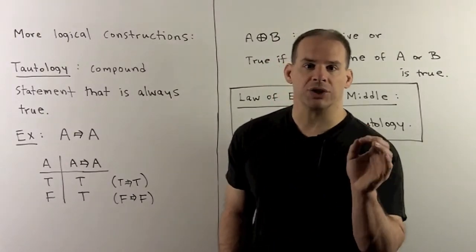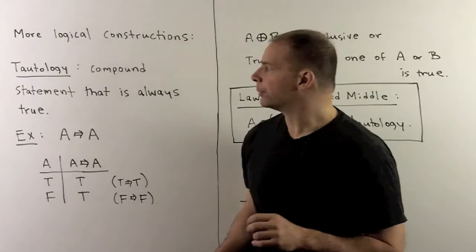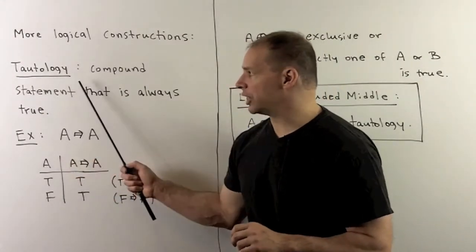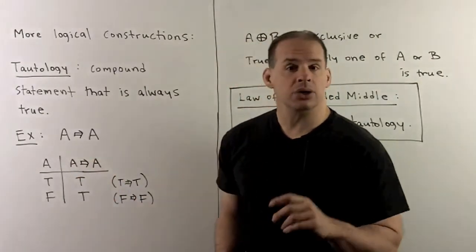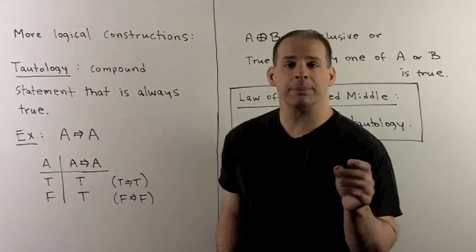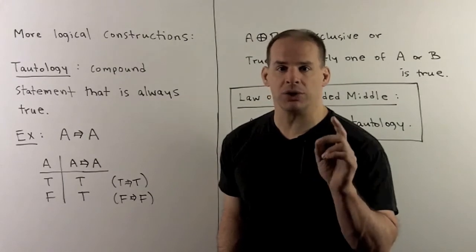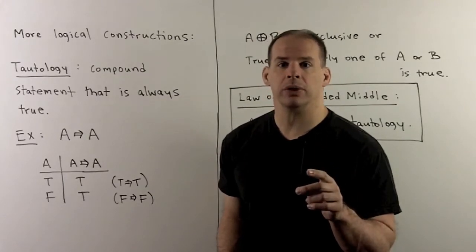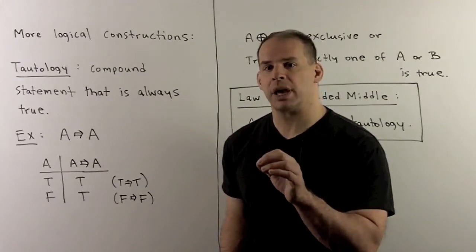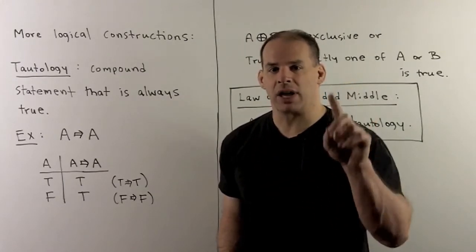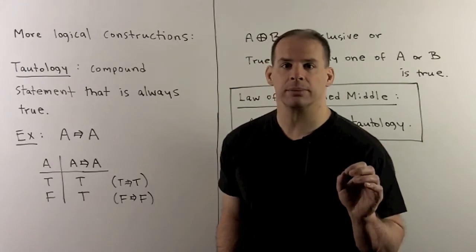For our next construction, we have tautology. A tautology is a compound statement that's always true. So in the truth table of a tautology, the final column will be all Ts.